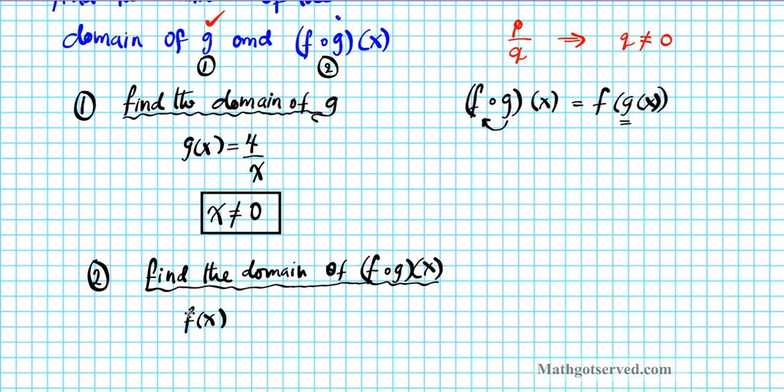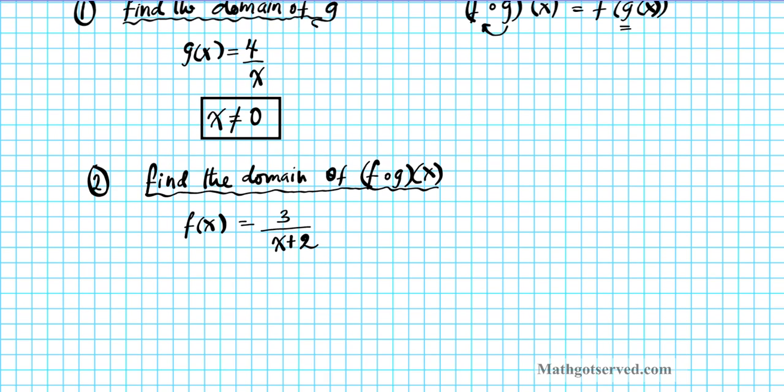F of x, the outer function, is 3 divided by x plus 2. Now to find f of g, we're going to substitute the input with another function. So take out x, 3 divided by parenthesis plus 2. Now let's take a minute and look at what just happened here. The outer function had x's here, and I've taken out the x's.